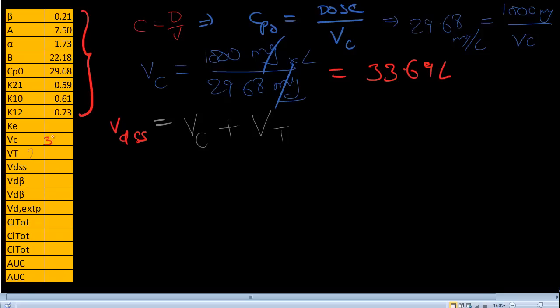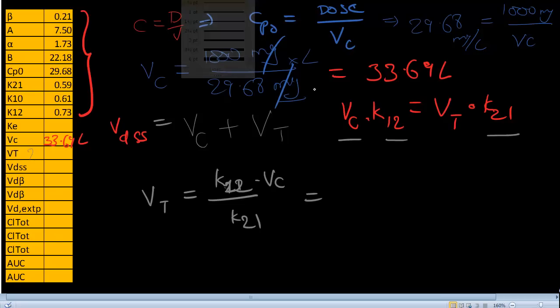Vc is 33.69 liters. And the formula for Vt is, we can use this formula: Vc times k12 is equal to Vt times k21. We know Vc, we know k12, we know k21. Let's calculate Vt then. Vt is equal to k12 times Vc divided by k21.